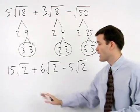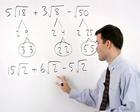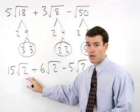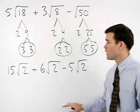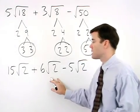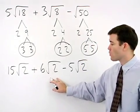Notice now that our radicands, or numbers inside the radicals, are all the same. So we can add these terms together. 15 root 2 plus 6 root 2 is 21 root 2, and 21 root 2 minus 5 root 2 is 16 root 2.